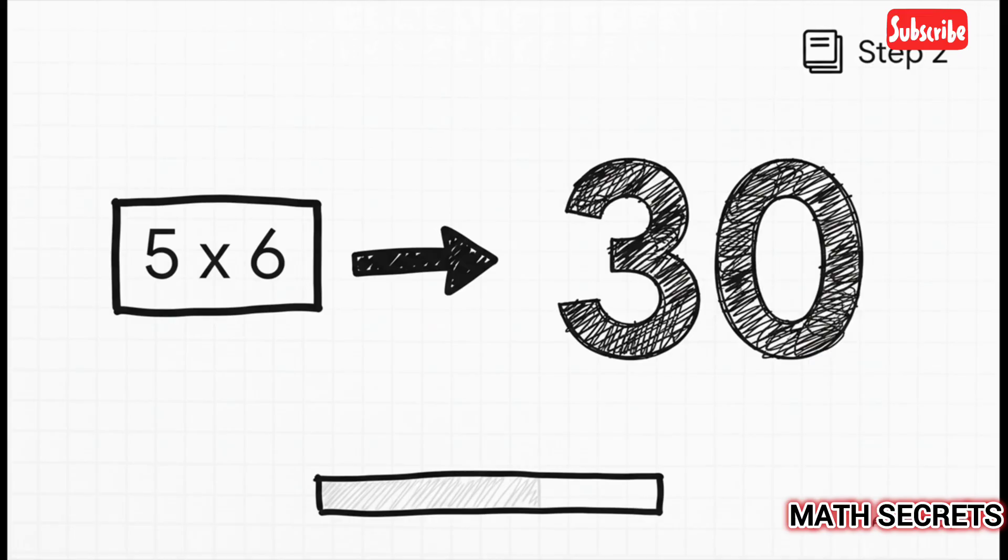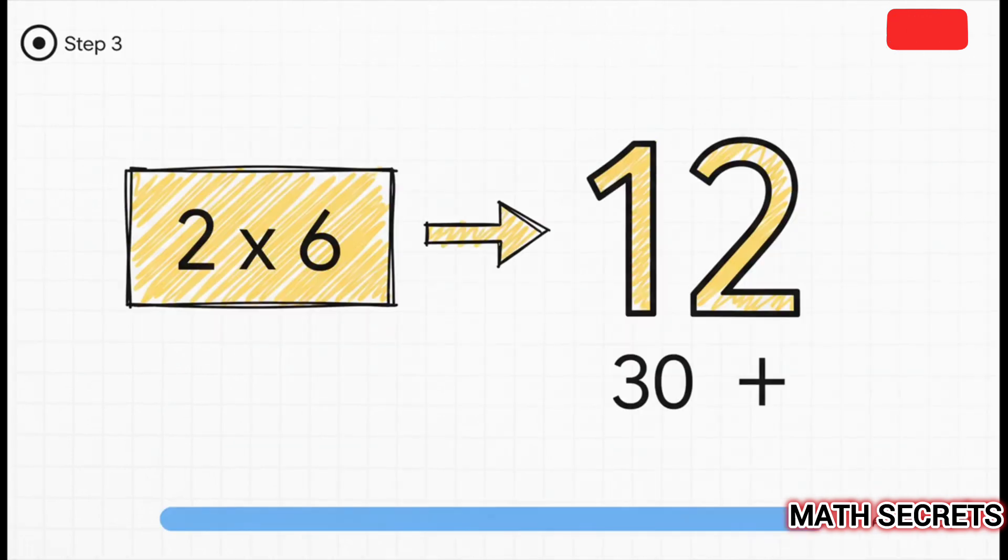Now for step two. Let's solve that first part. Pretty much everyone knows five times six is 30. That's the first easy part done. See? We're already halfway there. And step three is just as simple. We solve the second part. Two times six is just doubling six, which gets us 12. So now our whole problem is just a simple addition, 30 plus 12.